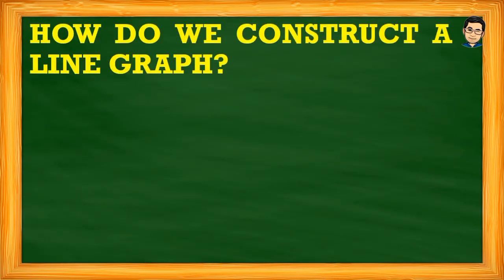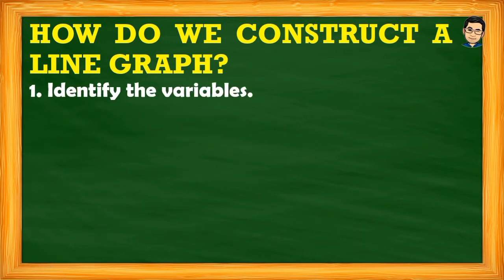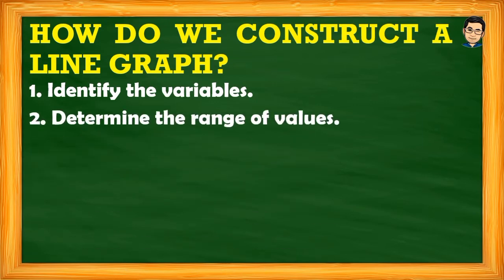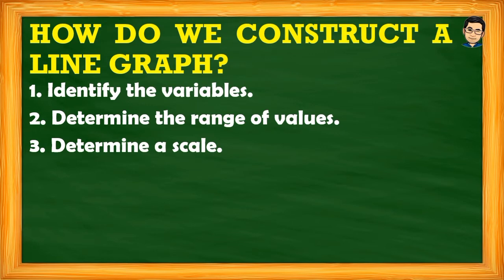One of the most important questions we need to answer is: how do we construct a line graph? First, we need to identify the variables. For example, if the data is about population, the variables would be population and year or day or week — usually one of the variables is time. Next, determine the range of values — consider how spread out the values are. Then, determine a scale, which we also discussed in the bar graph lesson.